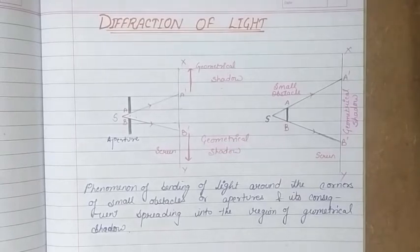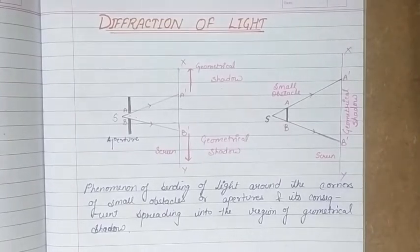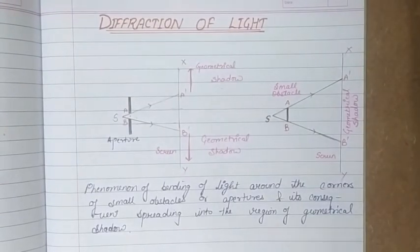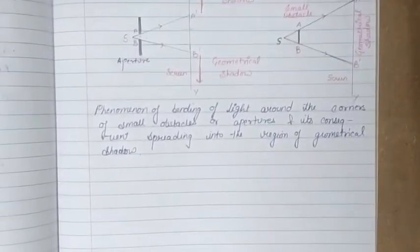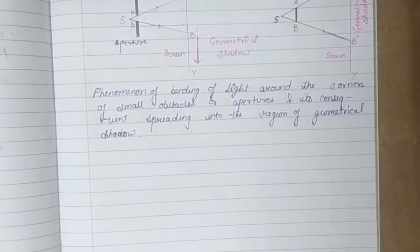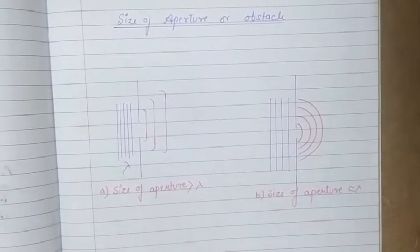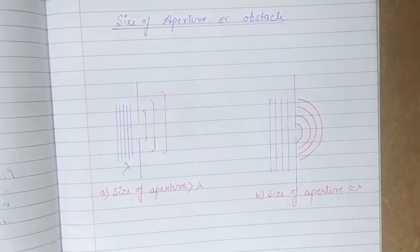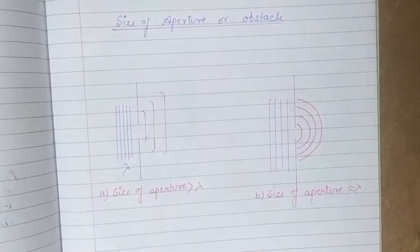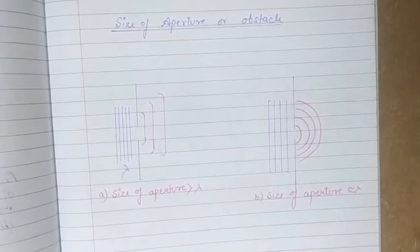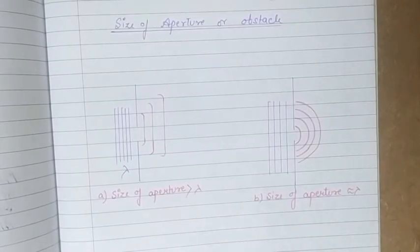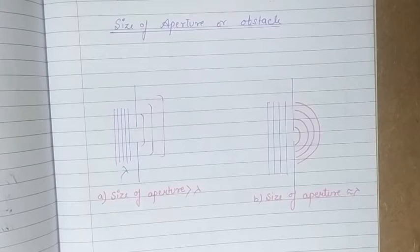These rings are called fringes, and this shows that light bends around the edges and can show the phenomena of diffraction. However, for the phenomena of diffraction, the size of the obstacle matters. Now we are going to discuss the comparison of size of aperture or obstacle with the wavelength, which can be understood by the following diagrams.